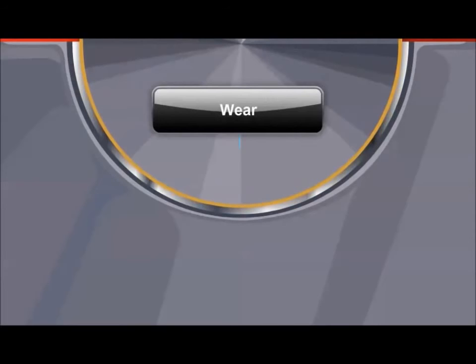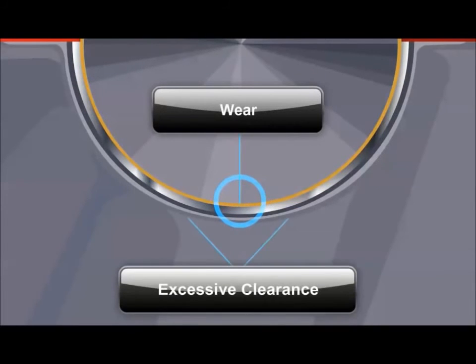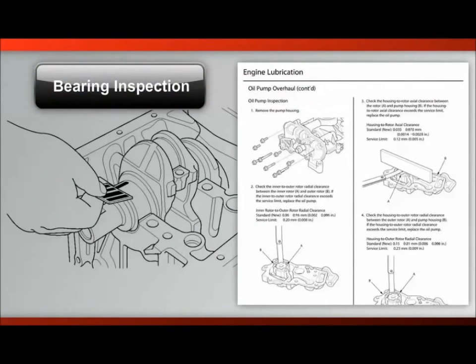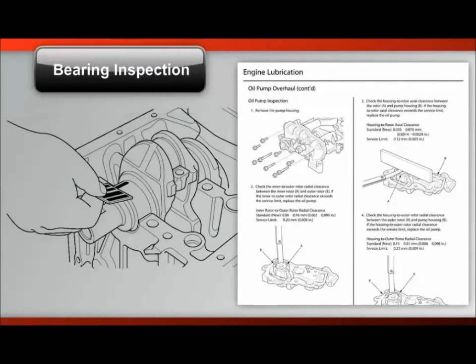As we stated earlier, oil pressure also drops as internal engine components wear. Wear creates excessive clearance, reducing resistance, and allowing oil pressure to bleed away. Our service manuals include engine inspection procedures for bearings and oil pumps.